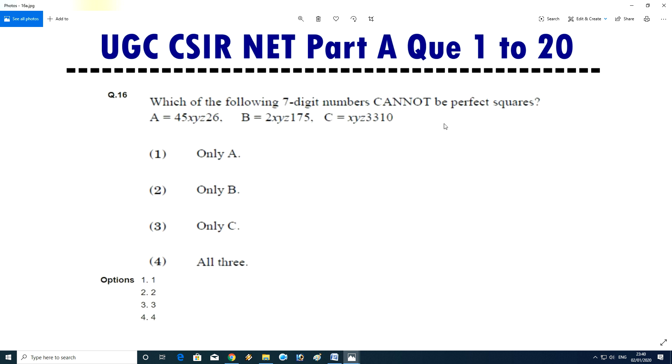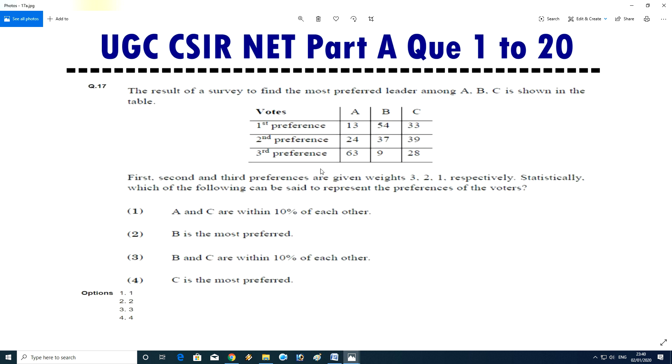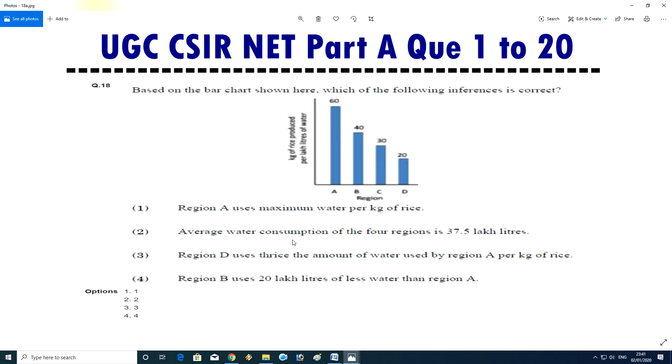Question number 16: which of the following seven digit numbers cannot be a perfect square? Answer is D, all these, no one is perfect square. Question number 17: the result of a survey to find out the most preferred leader among A, B, C is shown in the table. Answer is second, B is the most preferred.